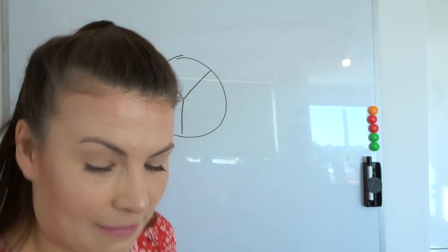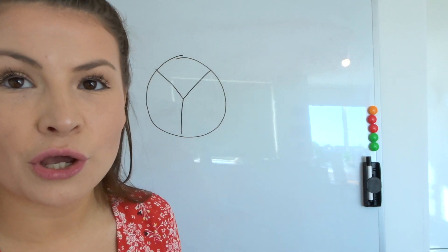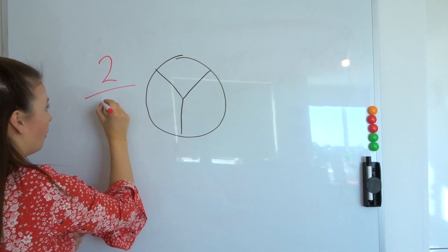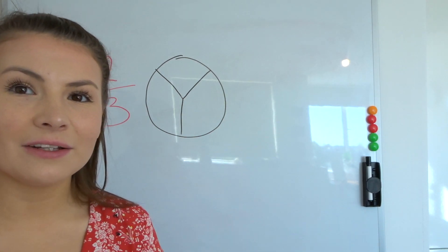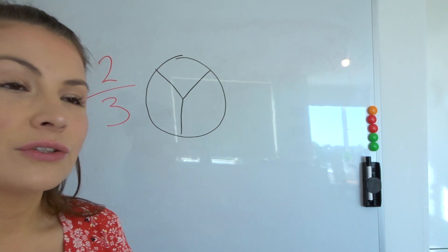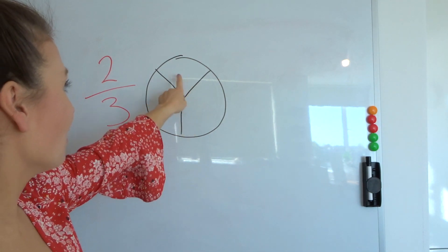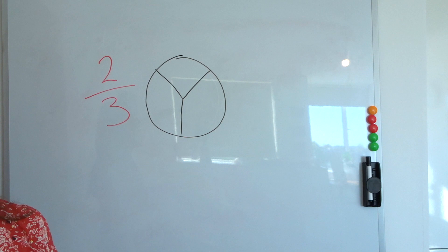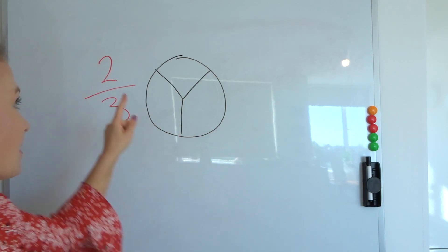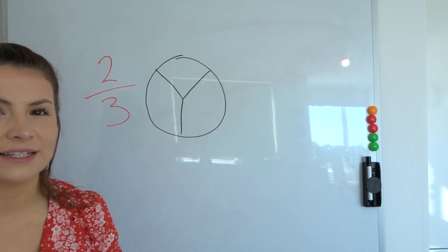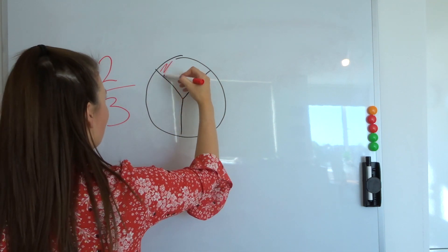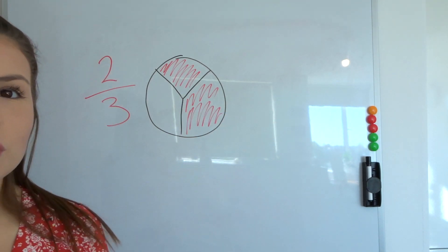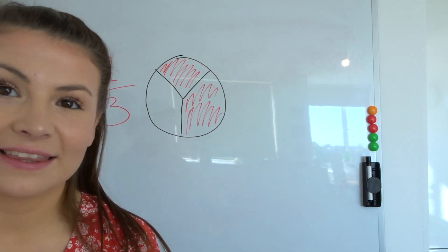Now I want to shade in two thirds using my red pen. I've got three equal parts because I divided my circle into three equal parts — that's my denominator. And now I need two parts because that's my numerator, so I need to shade in two parts: one, two. There we go. That's what two thirds looks like in that circle.